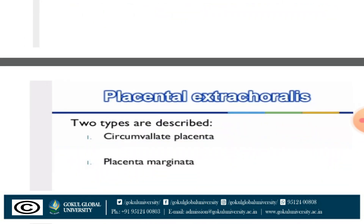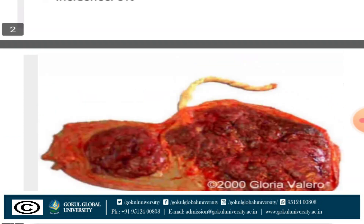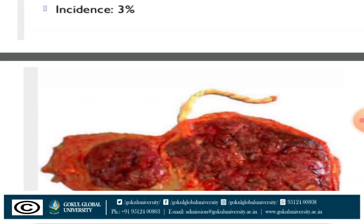In terms of treatment for placenta succenturiata: whenever the diagnosis of a missing lobe is made, exploration of the uterus and removal of the lobe under general anesthesia is to be done. Whenever the obstetrician or midwife diagnoses that one succenturiate lobe is missing and is retained in the uterus, we must explore the uterus and remove the retained lobe under general anesthesia.